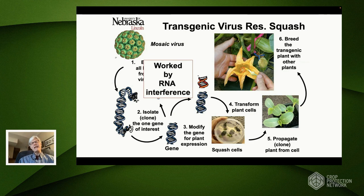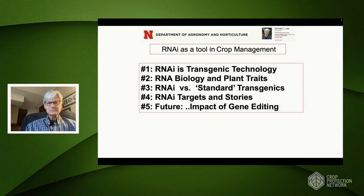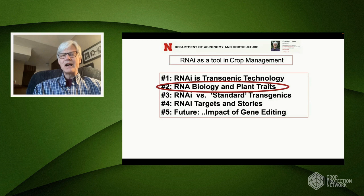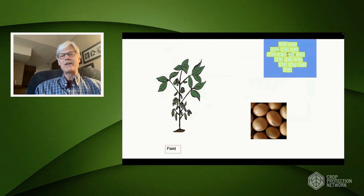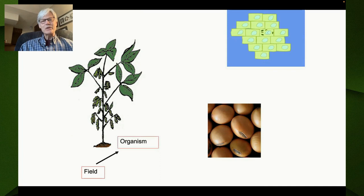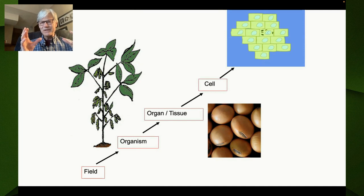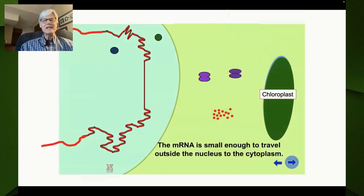Instead of the plants making the virus coat protein that induced an immune response, it was triggering a process we now know is RNA interference. They didn't know it at the time. They knew it worked and it was commercialized, but they didn't know the details of how it worked. Now we understand these details and can take advantage of them to use RNAi as a technology. RNAi is transgenic technology — you're introducing new genes — but the impact of those genes is different. To understand that difference, we need a good understanding of the role that RNA molecules play in controlling traits.